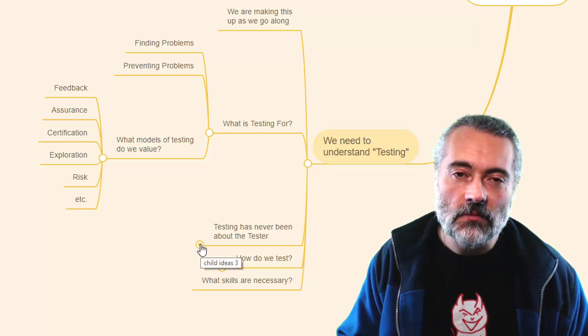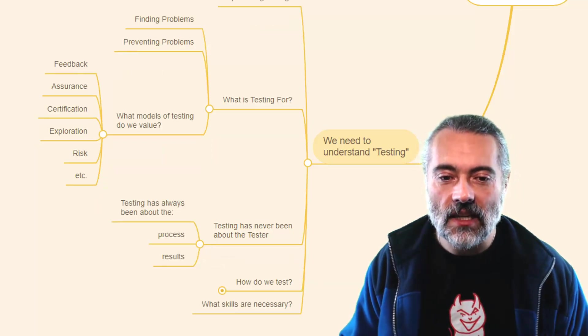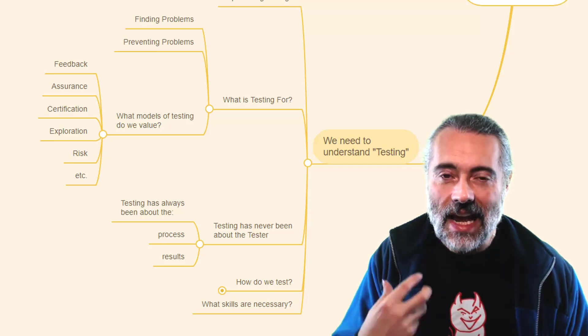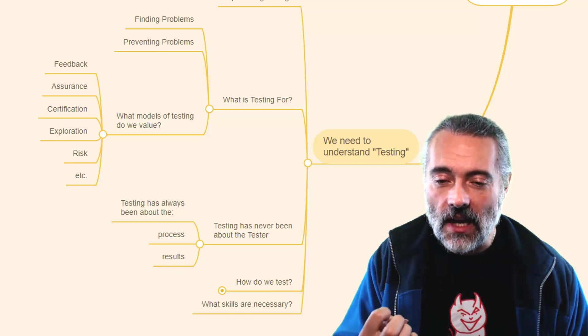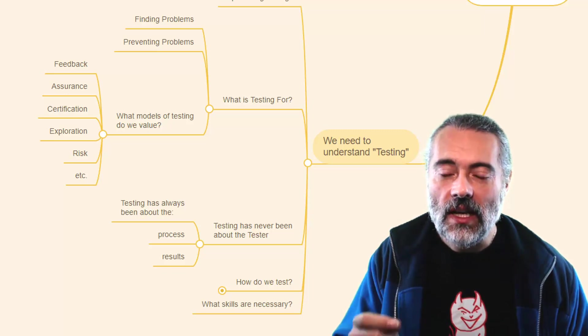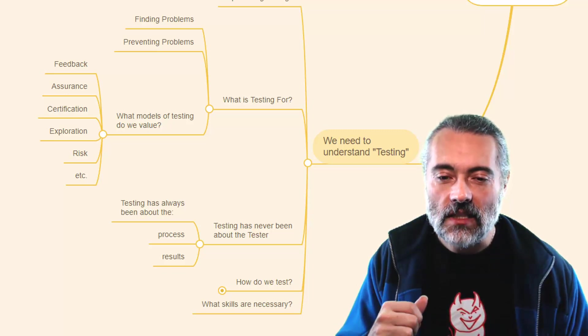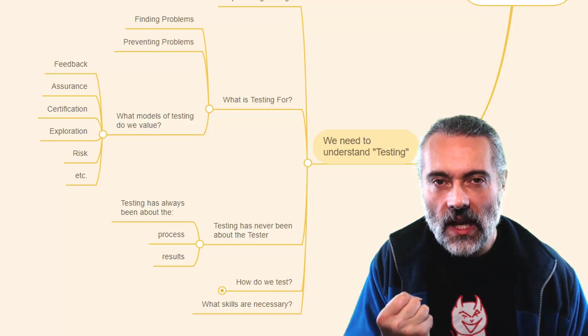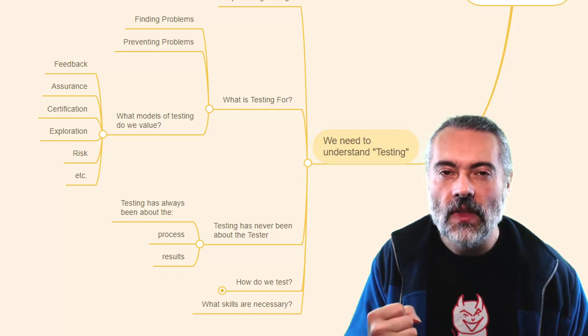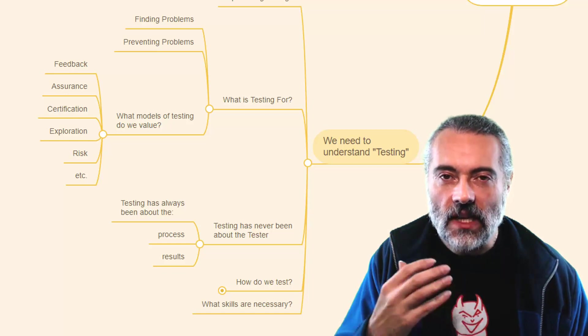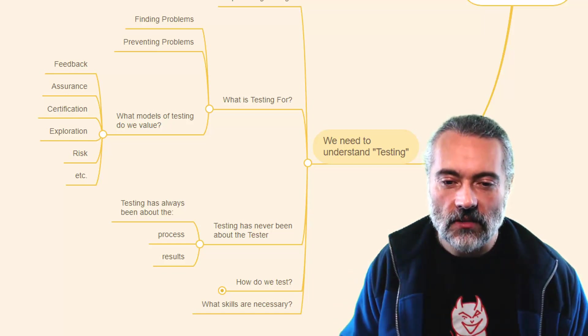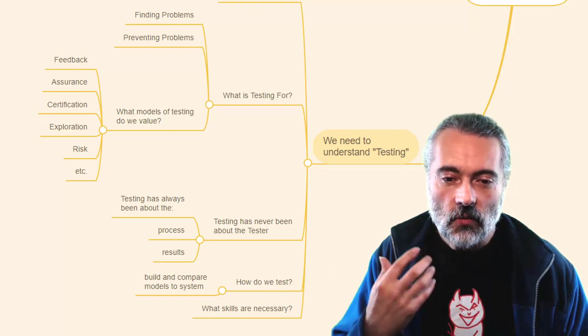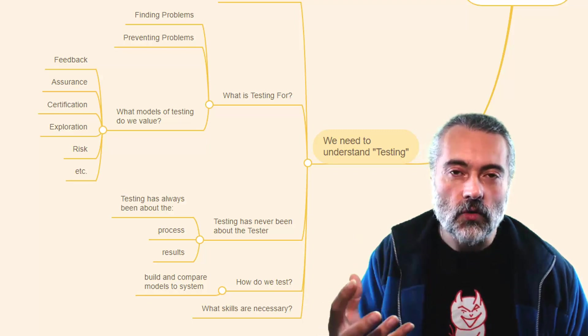And we have to understand that testing has never been about the tester. Testing has always been about the process that we use, the approach that we take and the results that we get back. And Agile in particular isn't about a tester does the testing. It is about testing as a verb and process on the project. And if testers hold that close and say, we do the testing, you are not harnessing the flexibility and freedom that you can have on an Agile project. It's important to understand how we test. Because fundamentally when we test, we, I think, we build and compare models to the system.